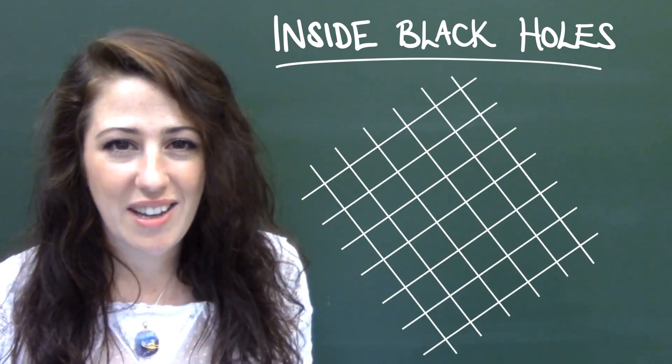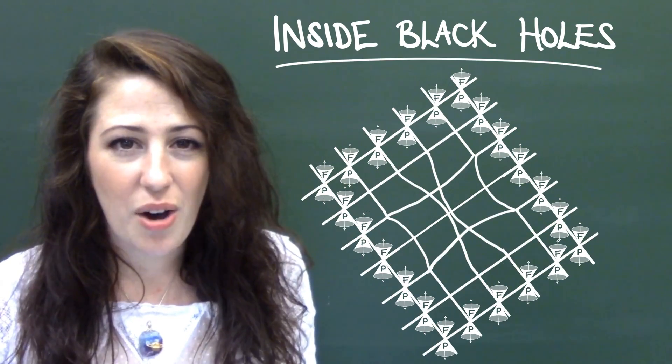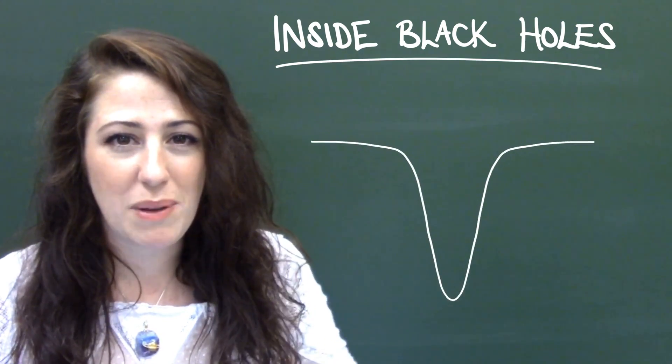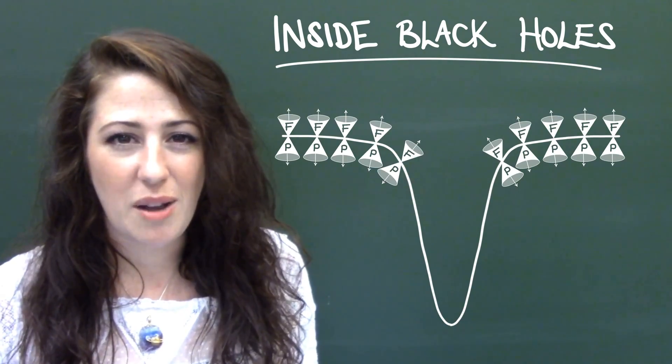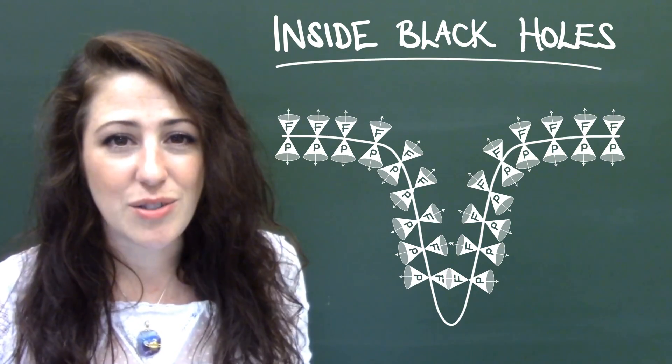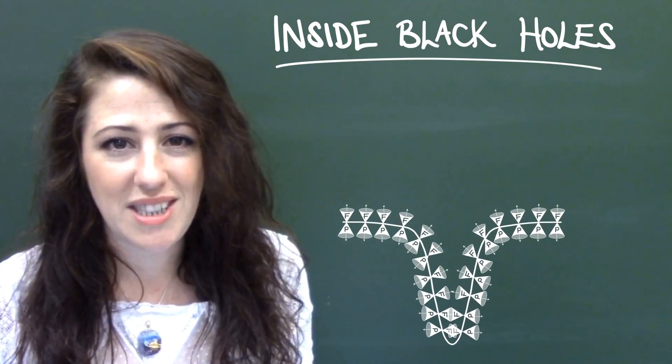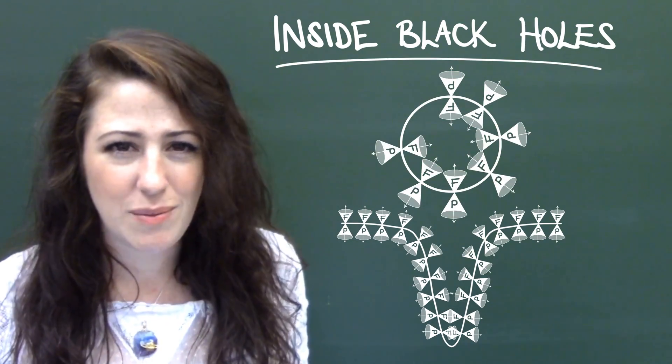If we imagine a light cone on every point in space, when we add a black hole it starts to curve space-time and the light cones begin to tilt. Because black holes curve space-time so dramatically, the light cones tilt so much that all the future time arrows start pointing towards each other and the past no longer seems to exist.